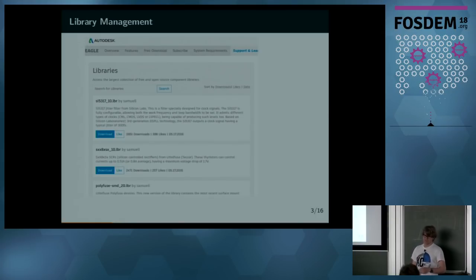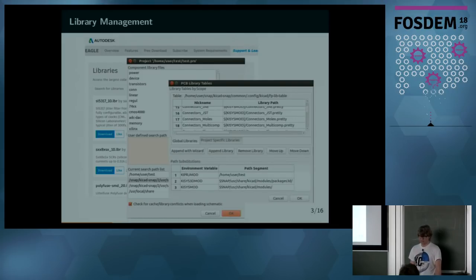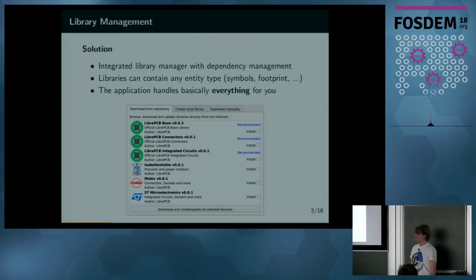For example, as an Eagle user, you maybe know this website where you search for libraries, download something and install it manually. Or in KiCad, in the schematic editor, this is the library configuration dialogue. Or in the board editor, I see a lot of file paths there. And some environment variables and path substitutions and project specific libraries, global libraries and so on. And I asked myself, why is this so complicated? I just want to use these libraries.